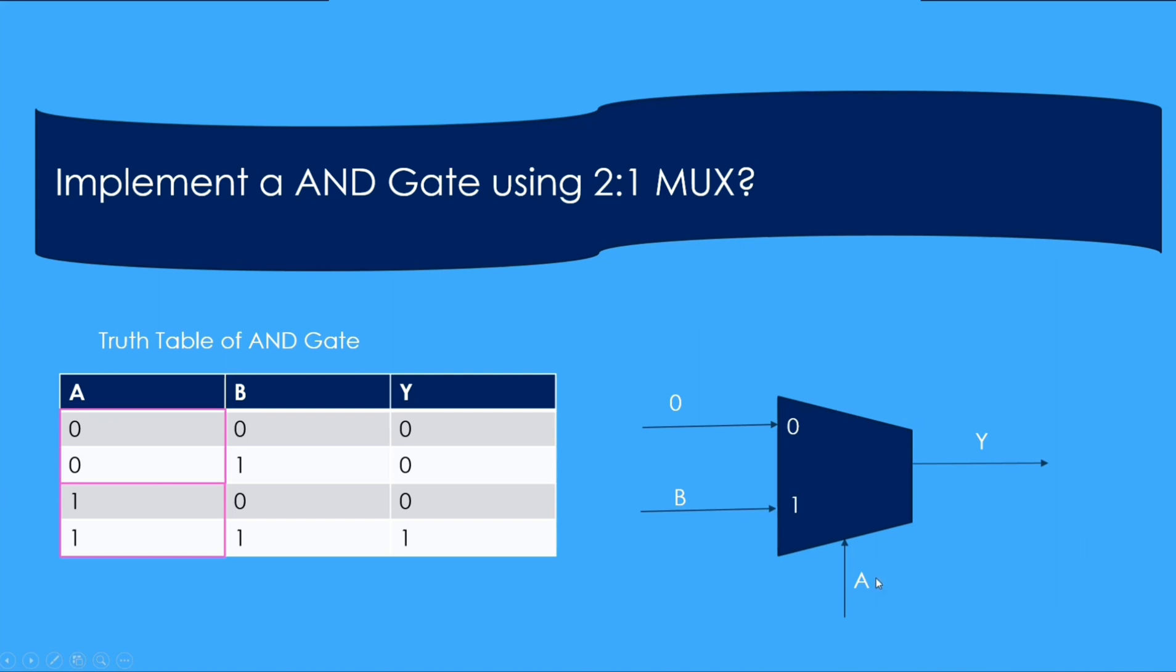If we tie A at the select line, this is the truth table of AND gate. And when A is 0, Y is always 0.